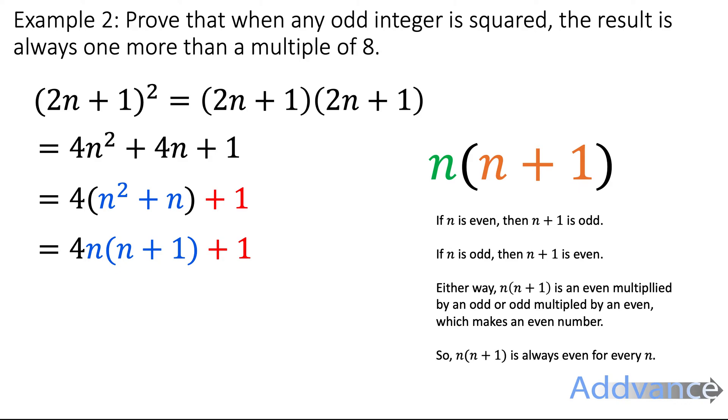Whichever one of those it is, that is an even times an odd or an odd times an even. And that means an even times an odd is an even. And therefore, n times n plus 1 is an even number. 4 times an even number is a multiple of 8, because 4 times an even always makes a multiple of 8. And then we have to add the 1 more. You might want to rewind and listen to my explanation again there.